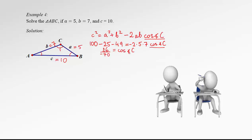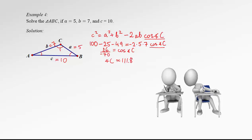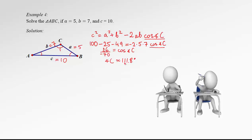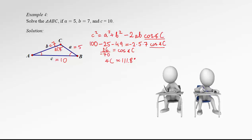So 100 minus 25 minus 49 gives us 26, and we divide by the coefficient negative 70. To find angle C, we use the inverse cosine function of that number. Angle C turns out to be approximately 111.8 degrees, which we record on the diagram.